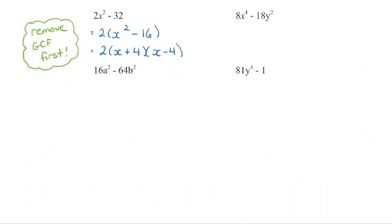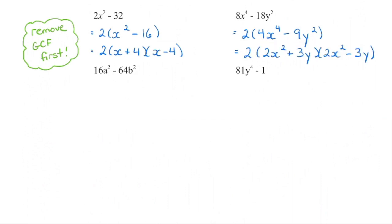We set up the conjugates, one is a plus and one is a minus. Square root the first term to get x, and square root the second term to get 4. Same thing for the next example — 8 and 18 are not perfect squares, but we can remove a greatest common factor. Always check if we can factor further — yes we can. Set up the conjugates, one is a plus and one is a minus. Square root the first term to get 2x squared, and square root the second term to get 3y.